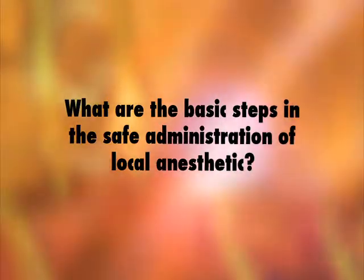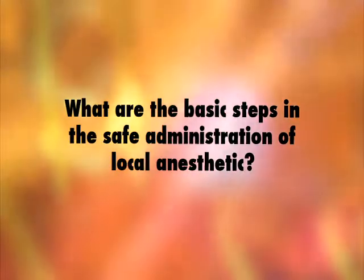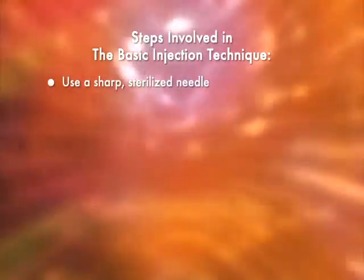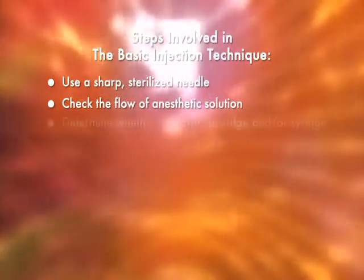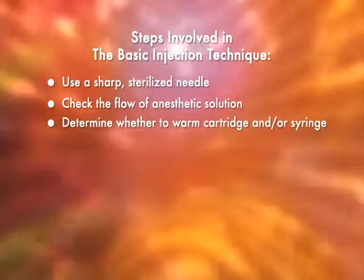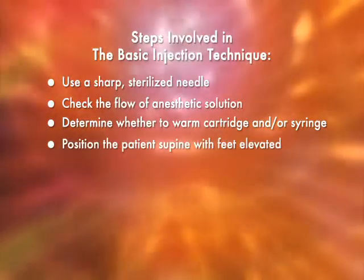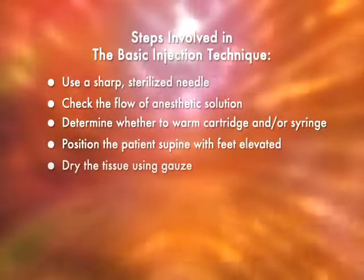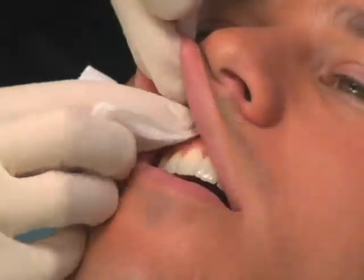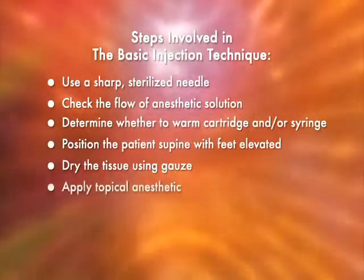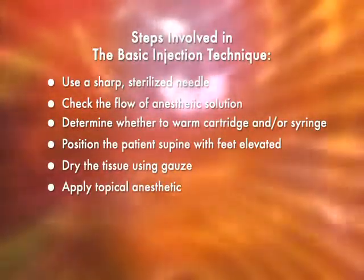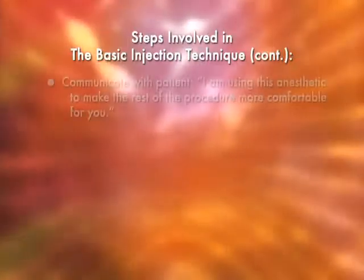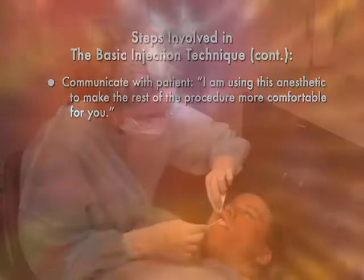What are the steps in the safe and painless administration of local anesthesia? Use a sterilized sharp needle, check the flow of the anesthetic solution, determine whether to warm the cartridge or the syringe, position the patient properly, dry the soft tissue at the site of injection, apply topical anesthetic to the site of needle penetration, and communicate with your patient.